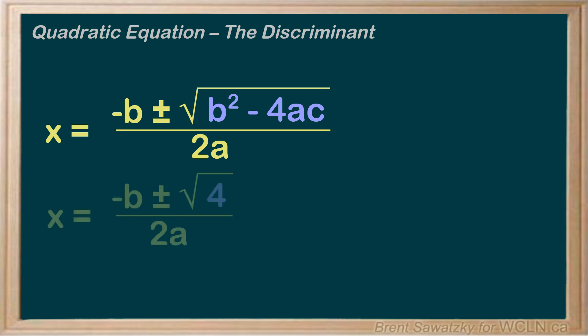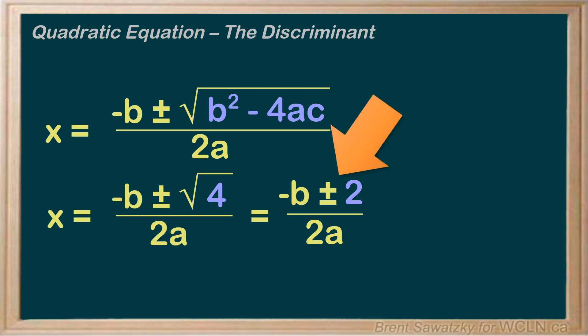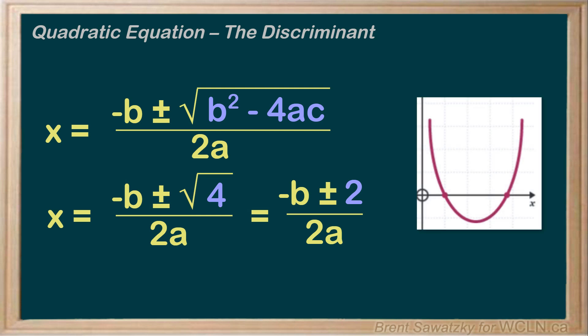For instance, if the discriminant was 4, then we would take a square root of 4, that's 2, and one root would be calculated when we add the 2, and the other root would be calculated when we subtract the 2. So clearly, this would give us two different answers, and so we know that this is a case where the graph would cross the x-axis twice. So if the discriminant is any positive number, we know that we should expect 2 roots.